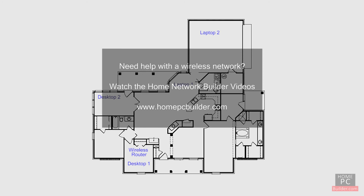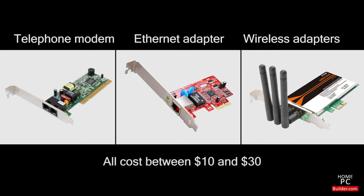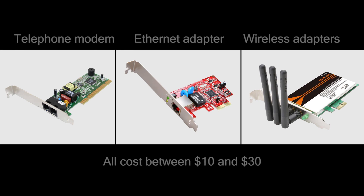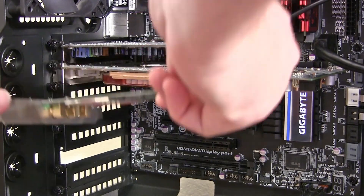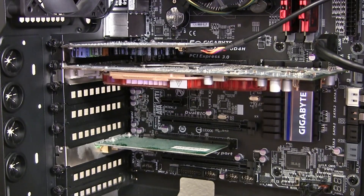For help in setting up a secure wireless or wired network for your home, check out the Home Network Builder videos available on our website, www.homepcbuilder.com. Telephone line modems, Ethernet adapters, and basic wireless adapters all cost between $10 and $30. You just have to decide on the speed of internet connection and file sharing you need. In the installation lessons, we are also installing a PCI wireless network adapter.